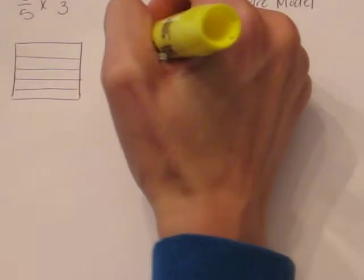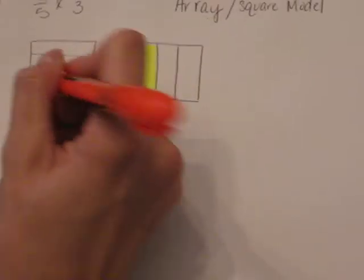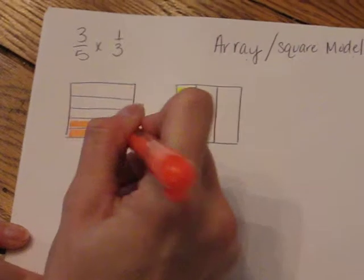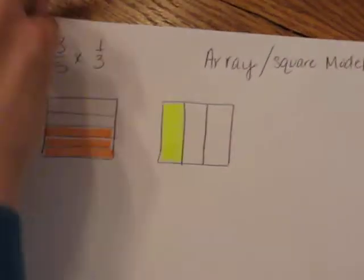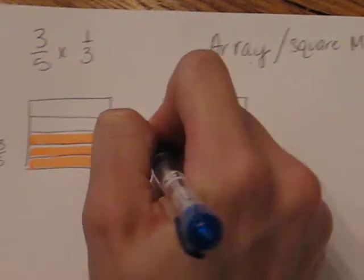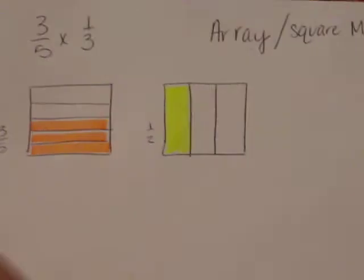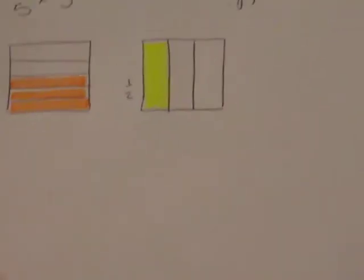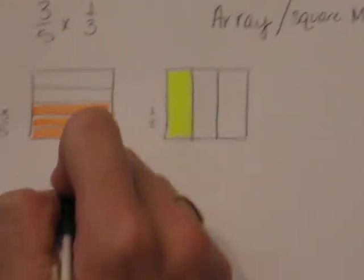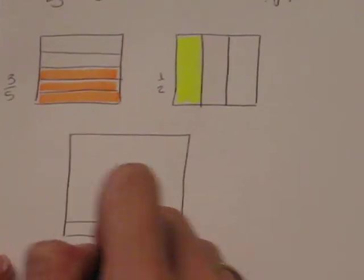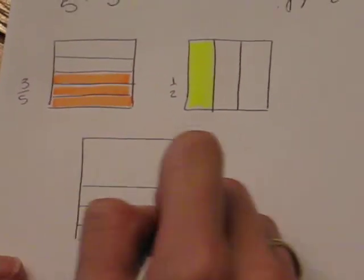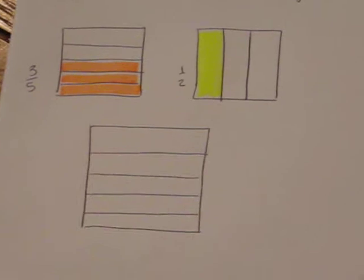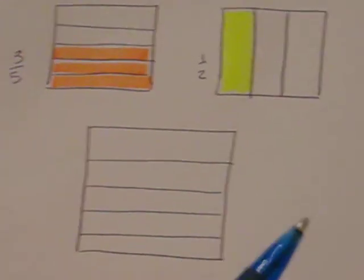So now over here I'm going to shade in one-third, and I'm using lighter colors for this because we're going to talk about how multiplication is covering of space, area. It's the measure of square units. So what we're going to do is we're going to take, I'm making it bigger so it's more visible on the camera.